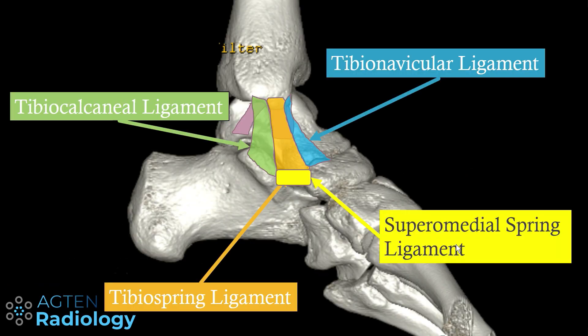Before I show you this pathology on MR images we have to understand the anatomy and the concept behind this injury type. First of all you need to know the anatomy of the deltoid ligament — I made a video about it a few months ago and you can find the link in your upper right corner right now or in the description down below.